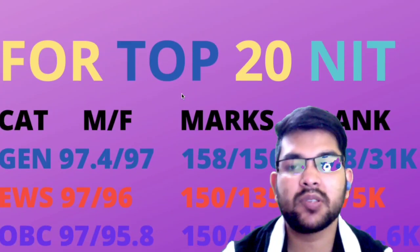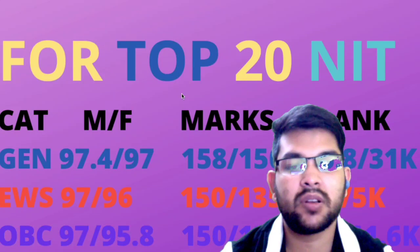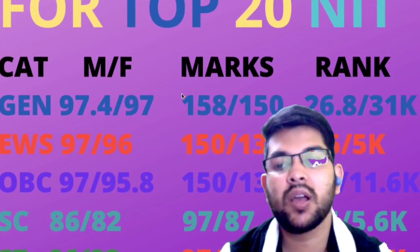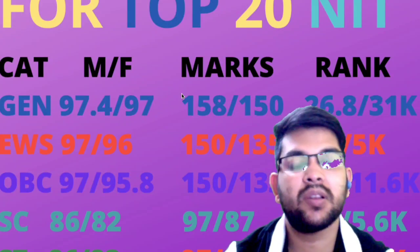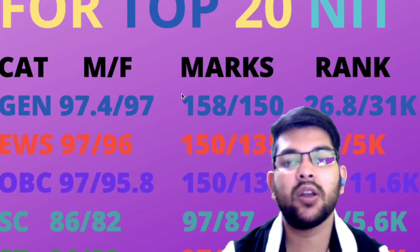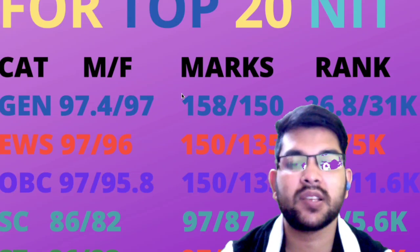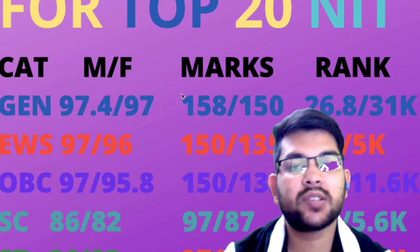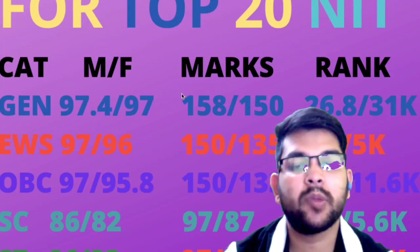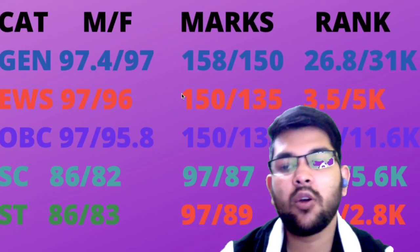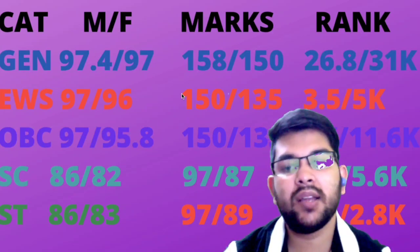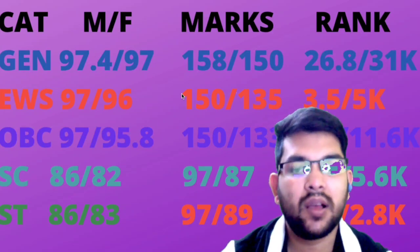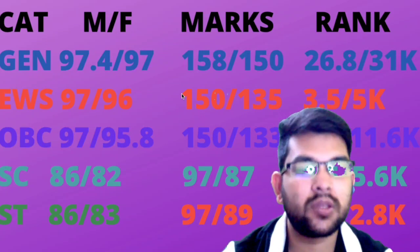For OBC in top 20 NITs, 97 and 95.8 percentile, marks of 150 and 133, and OBC ranks of 8,000 and 11,600. For SC category, 86 and 82 percentile, marks of 97 and 87 — note this is for a moderate paper; tougher paper may give the same percentile at lower marks. SC ranks are 3,500 and 5,600. For ST, 86 and 83 percentile, marks of 97 and 89, and ST ranks of 2,100 and 2,800.